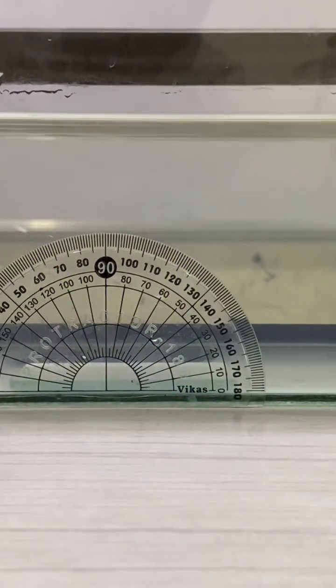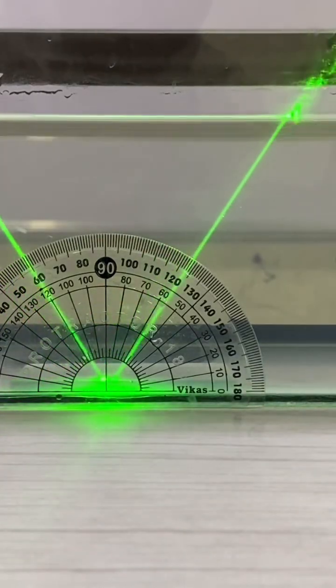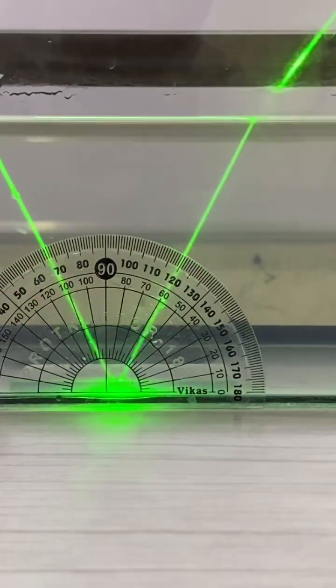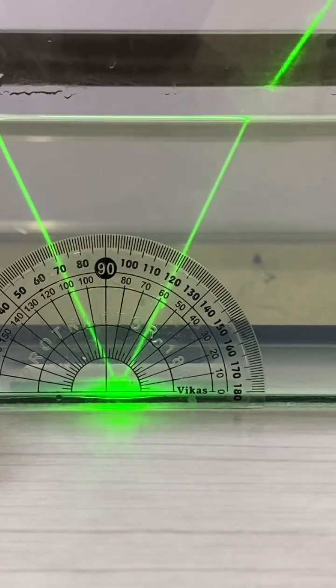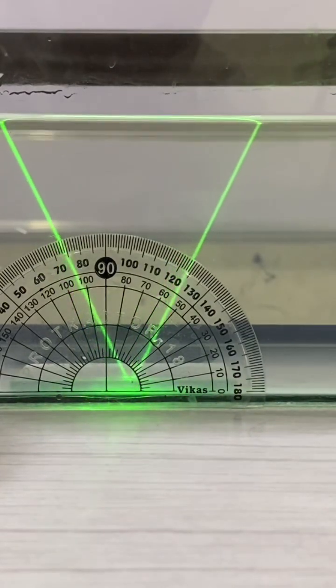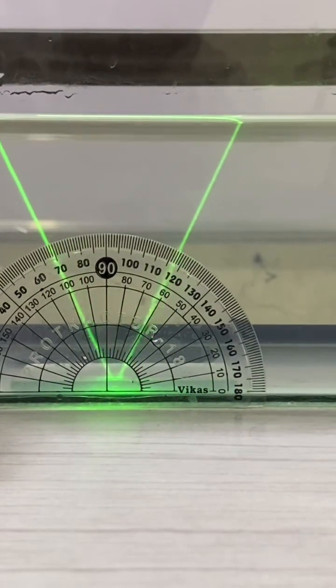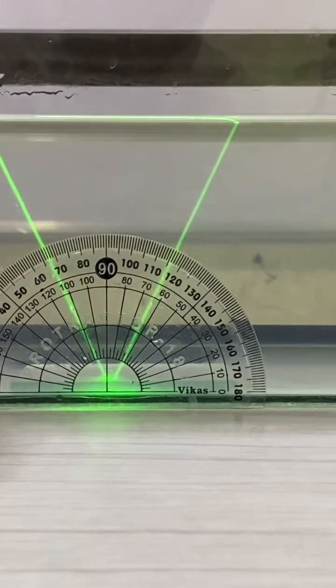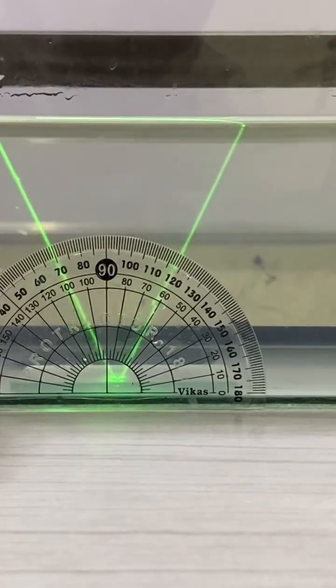Now I am changing the incident light ray direction. So now I am making it to fall on 70 degrees. You can observe the reflected light ray is at an angle of 70 degrees. Thus angle of incidence is equal to angle of reflection.